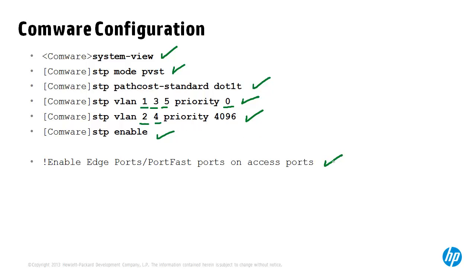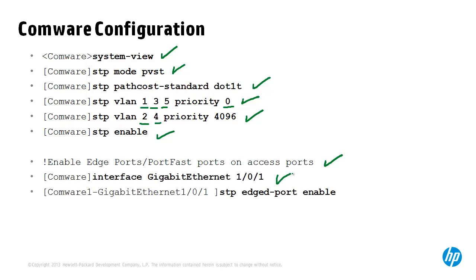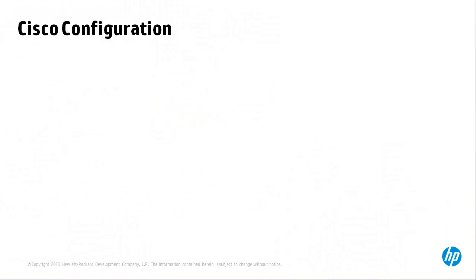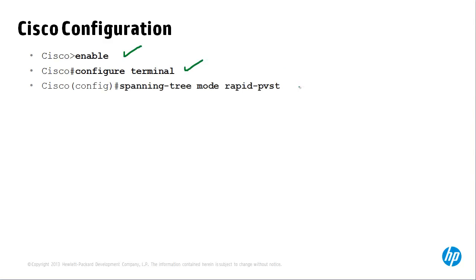Configure user-facing ports as edge ports or PortFast ports. In this example, interface GigabitEthernet 1/0/1 is configured as an edge port. For the equivalent configuration on Cisco: type 'enable' then 'configure terminal', and set the mode to Rapid PVST or PVST. The HP Comware switches will adjust to either PVST or Rapid PVST mode depending on the BPDUs received.